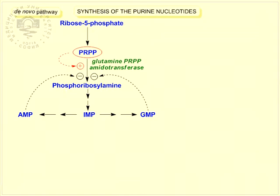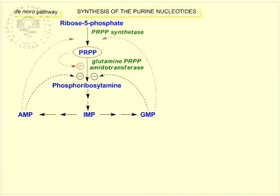The other regulatory enzyme is phosphoribosyl pyrophosphate synthetase. It, too, is allosterically inhibited by the end product, the purine nucleotides.